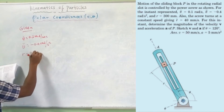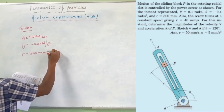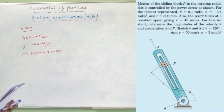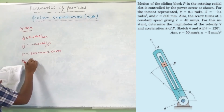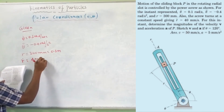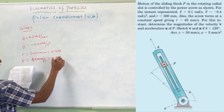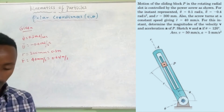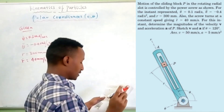R is equal to 1000 mm. Also, the screw turns at constant speed giving r-dot equal to 1000 mm per second. For this instance, determine the magnitude of velocity V and acceleration A of point P.